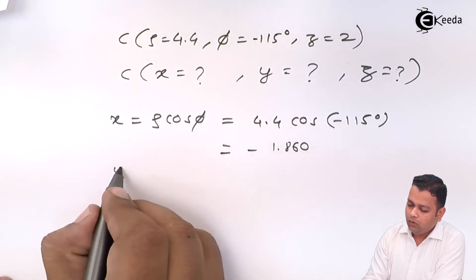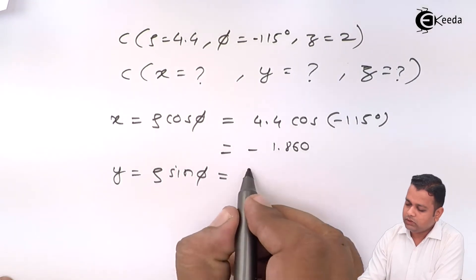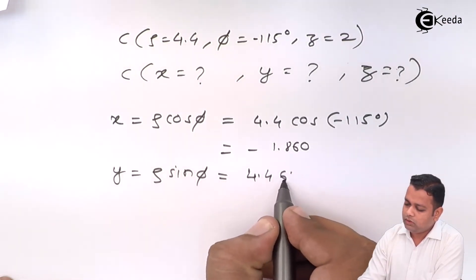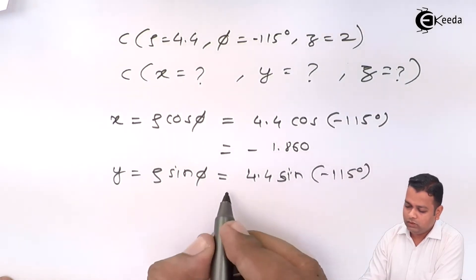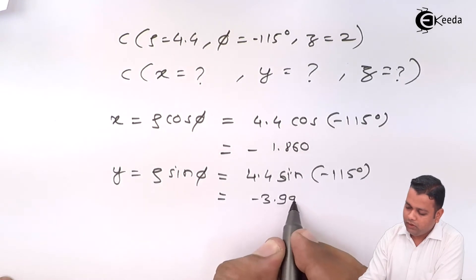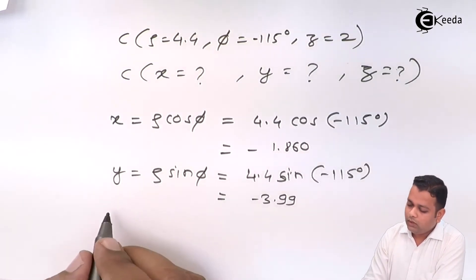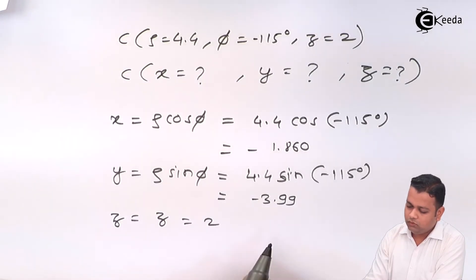Now, y is equal to rho sin phi. So, this is 4.4 sin of minus 115 degrees. This will give us the answer minus 3.99 and z is equal to z which is equal to 2.